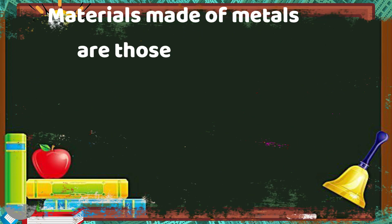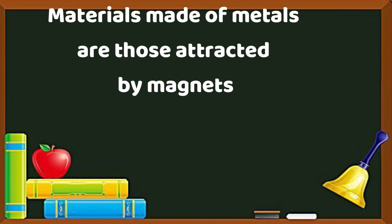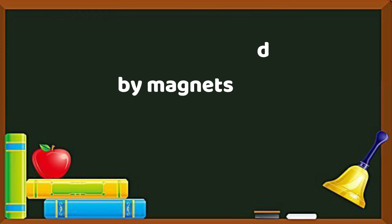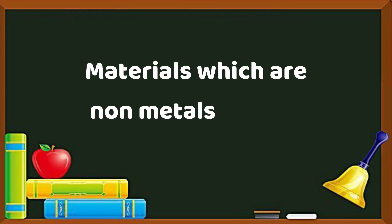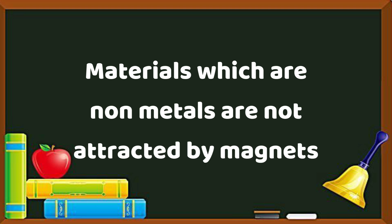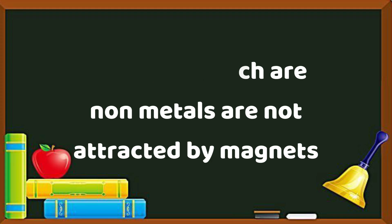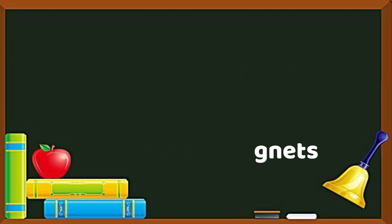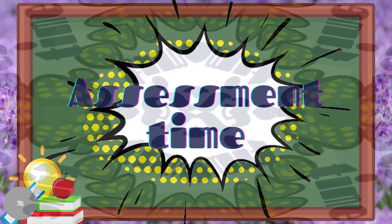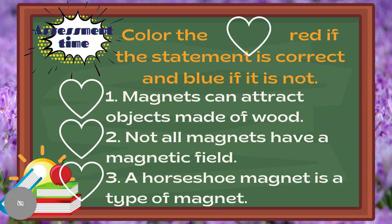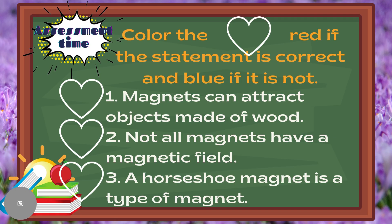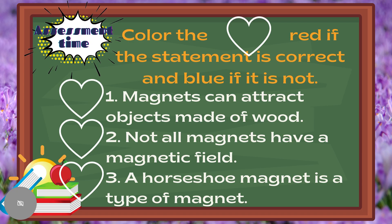After learning that materials made up of metals are those attracted by magnets, and materials which are non-metals are not attracted by magnets, let us perform this assessment. Are you all ready? Colour the heart red if the statement is correct and blue if it is not. Number 1: Magnets can attract objects made of wood.